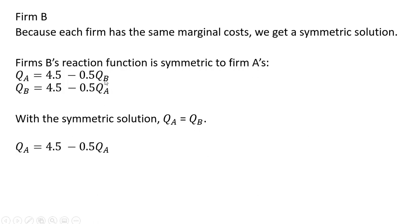So for Q subscript B, I can replace that with Q subscript A in Firm A's reaction function and solve for Q subscript A. Moving some things around and dividing through by 1.5, Firm A will produce 3 units, and once again, because of the symmetric solution, that means Firm B must be producing 3 units.